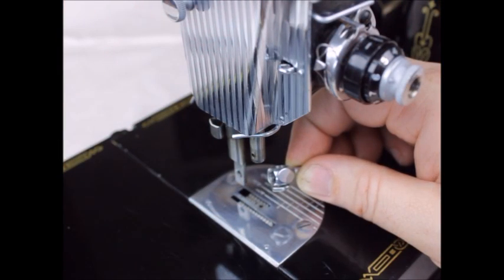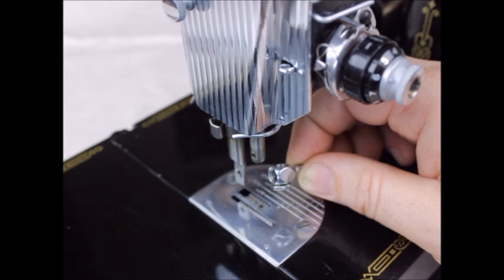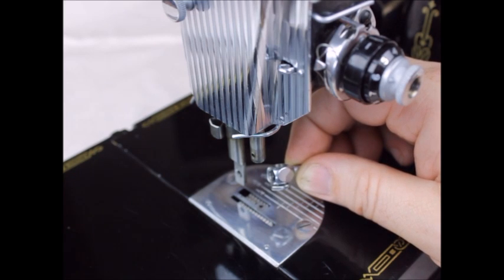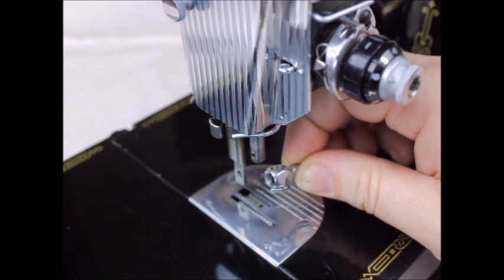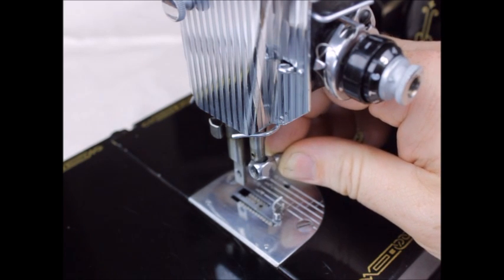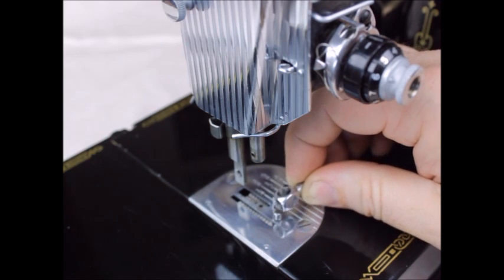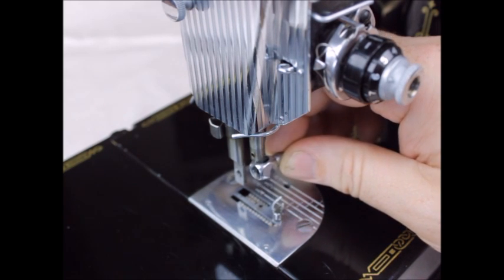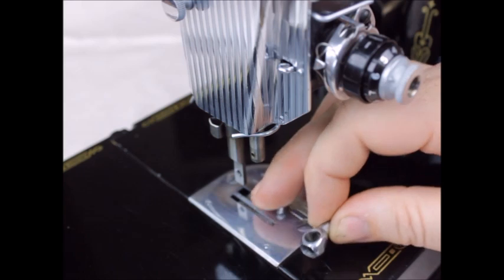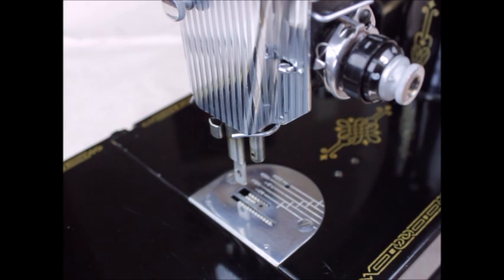Okay, so we now have the thread guide inserted into the needle clamp and we're ready to put it onto the needle bar. This is where the problem usually begins. As soon as we try to insert this on the needle bar, the thread guide usually falls out. Fortunately, there's a couple things you can do that remedy this easily.